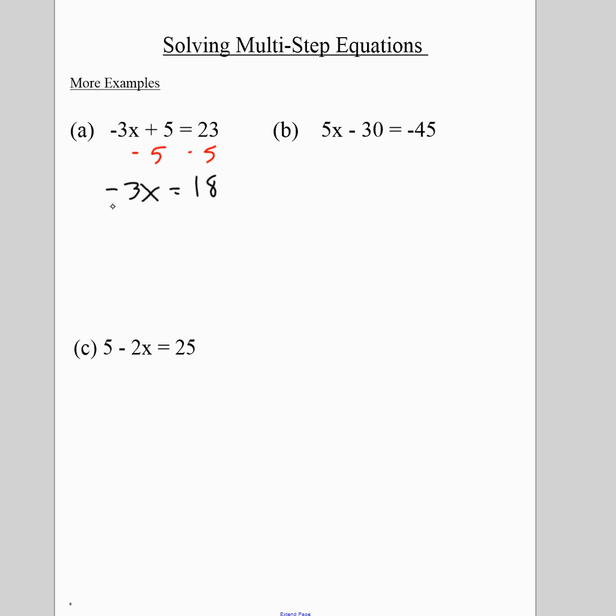Then to get rid of multiplying by negative 3, I need to divide by negative 3. My final answer is x equals negative 6. Check to see if you did it correctly.